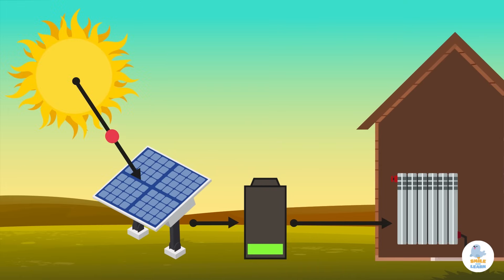For example, solar panels can store light energy and convert it into electricity to run household appliances or to heat water for showers.